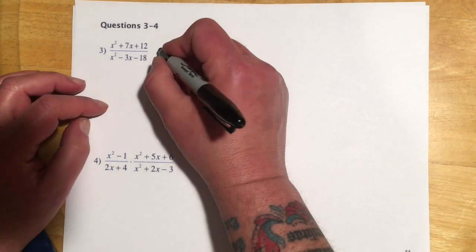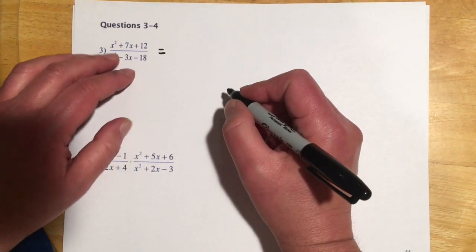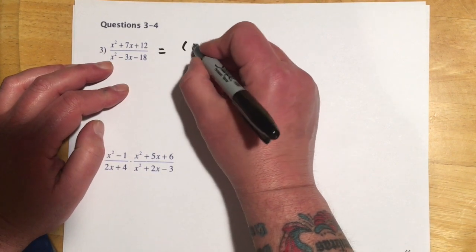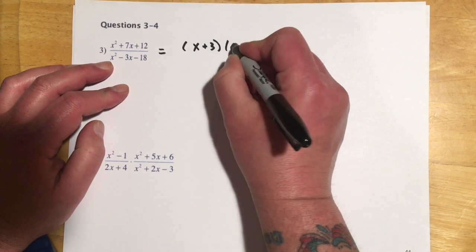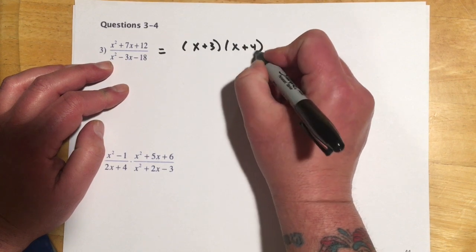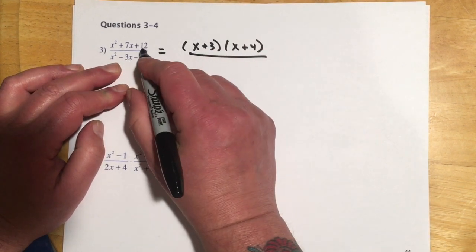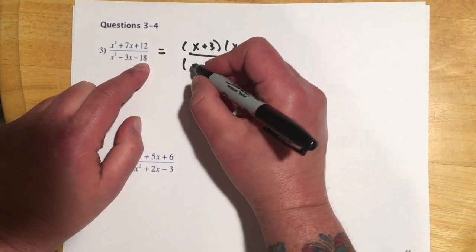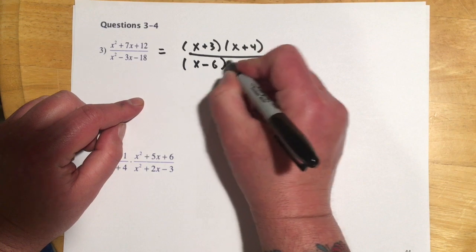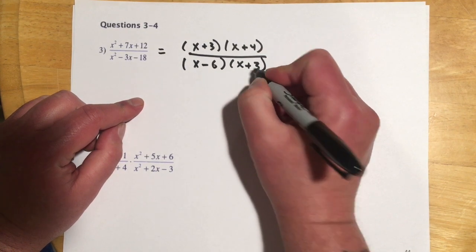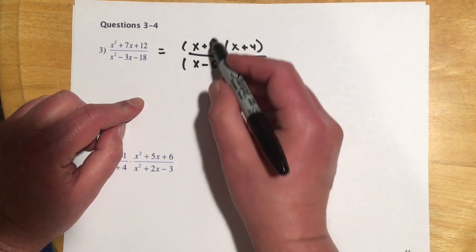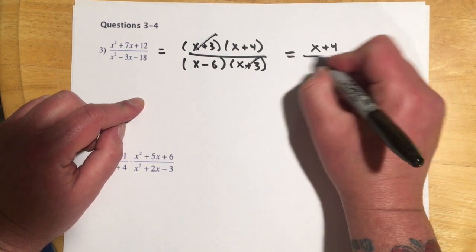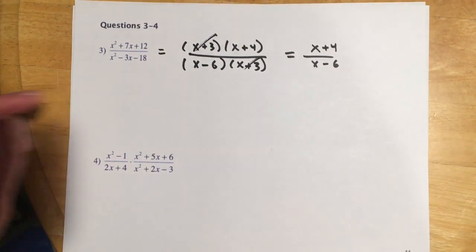Examples 3 and 4 are the ones to try in class. For example 3, we're reducing: the numerator factors into (x+3)(x+4) — two numbers that multiply to 12 and add to 7. The denominator factors into (x-6)(x+3) — two numbers that multiply to negative 18 and add to 3. Canceling the (x+3) factors leaves (x+4)/(x-6).